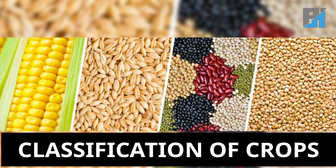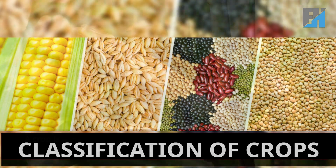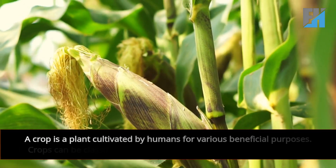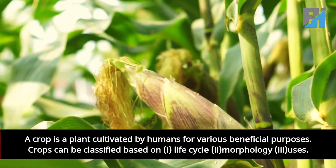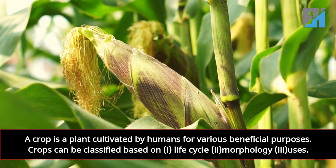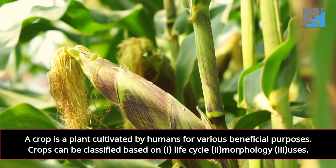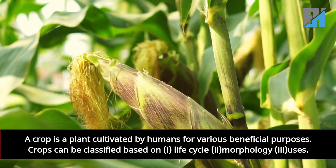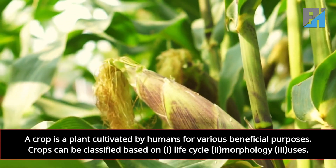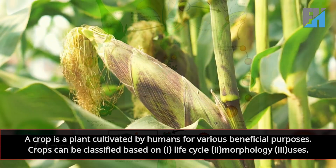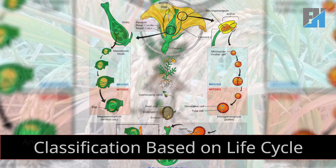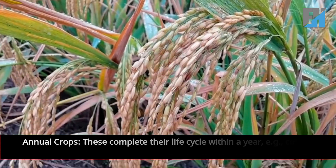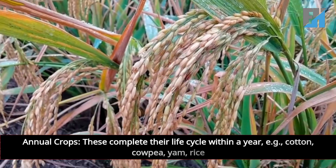We'll be exploring the topic: classification of crops. A crop is a plant cultivated by humans for various beneficial purposes. Crops can be classified based on life cycle, morphology, and uses. Classification based on life cycle: annual crops — these complete their